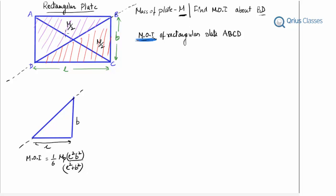Since we've chosen these two triangles, we can say that this must be equal to the moment of inertia of ABD about BD plus the moment of inertia of BCD plate about BD.